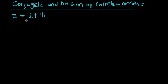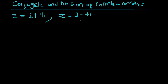For example, if z is equal to 2 + 4i, then the conjugate of z — written as z with a bar — is equal to 2 minus 4i. We negate the imaginary portion.